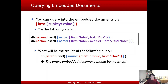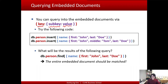Next, let's talk about embedded documents. A MongoDB field may contain an embedded document. There are two design choices: the embedding approach or the referencing approach. To query inside an embedded document, you specify the field in the main document followed by the subfield and value.